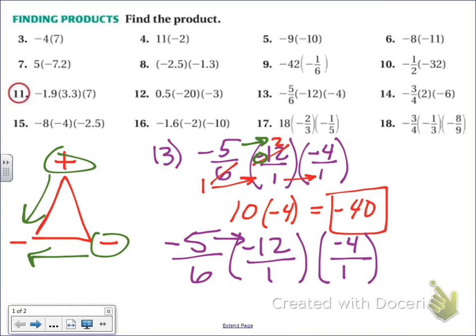Okay. That would give me negative 5 times negative 12, which is positive 60. Positive 60 times negative 4 is negative 240. Over 6 times 1 times 1 equals 6. So, negative 240 over 6.